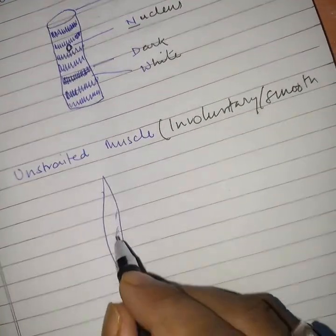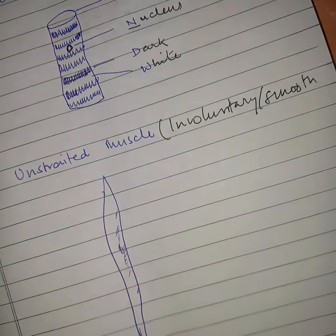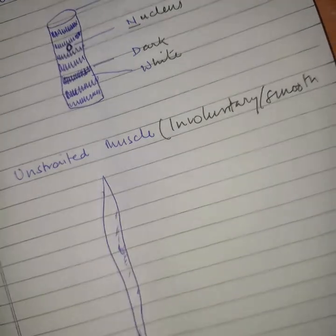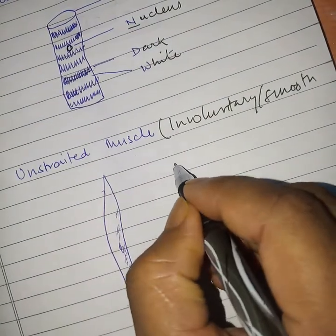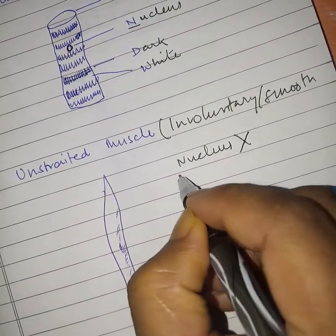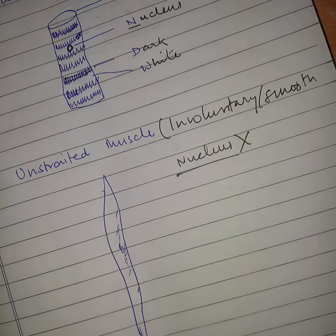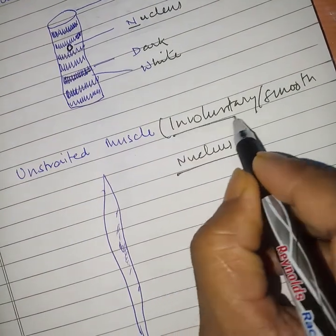Unstriated muscles are not under the control of one's will, so they are also known as involuntary muscles. They are also called smooth muscles because they are smooth in outline and do not have alternate dark and white bands. Unlike striated muscles, nucleus is absent in unstriated muscle. They are found in the intestinal passages, iris of the eye, skin lining of blood vessels, urinary bladder, and uterus. We have no control over their movements, thus they are involuntary in action.